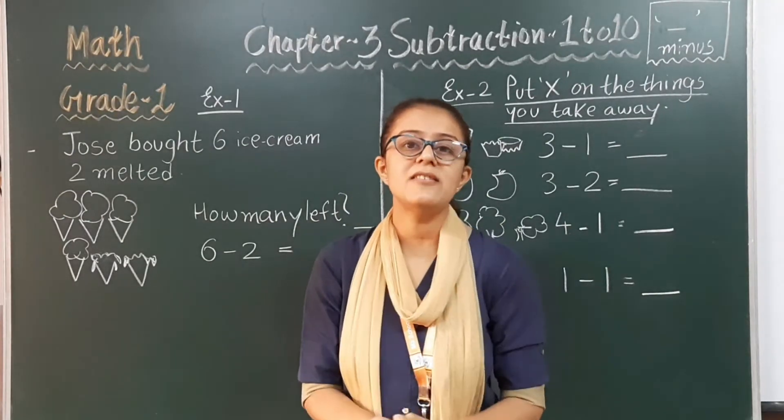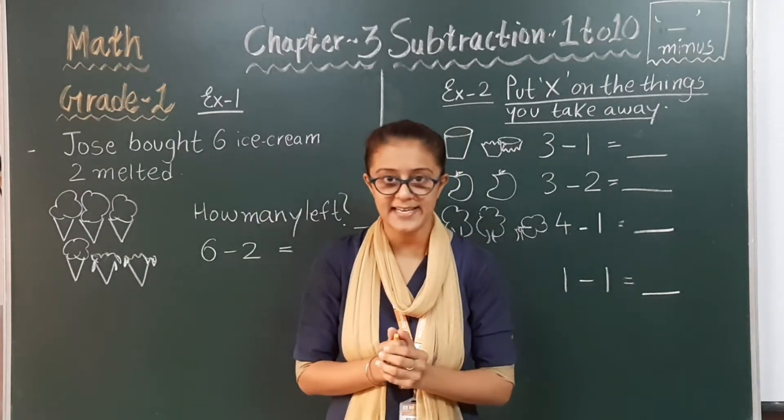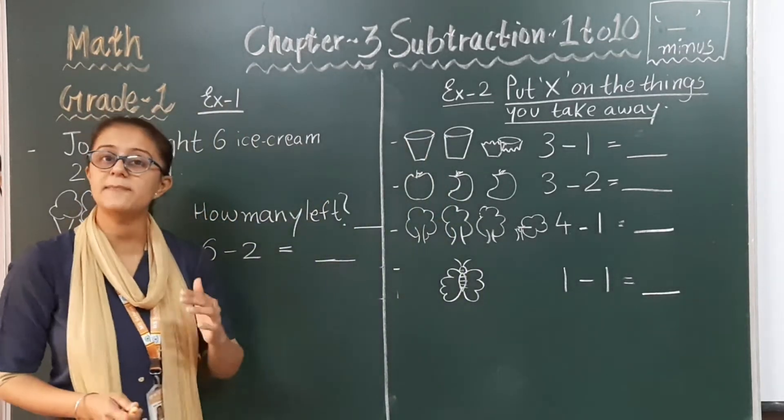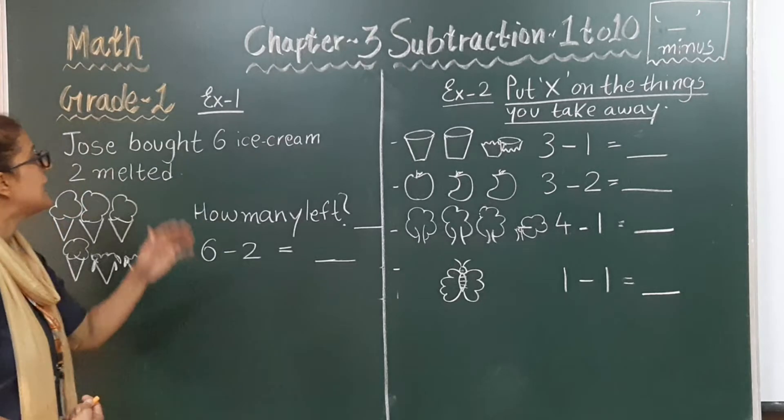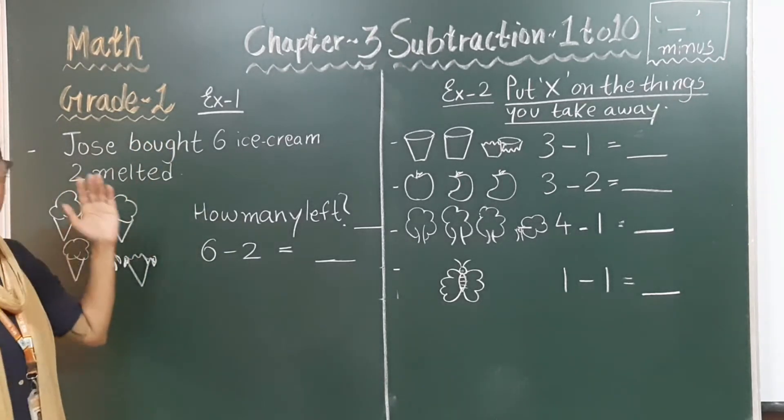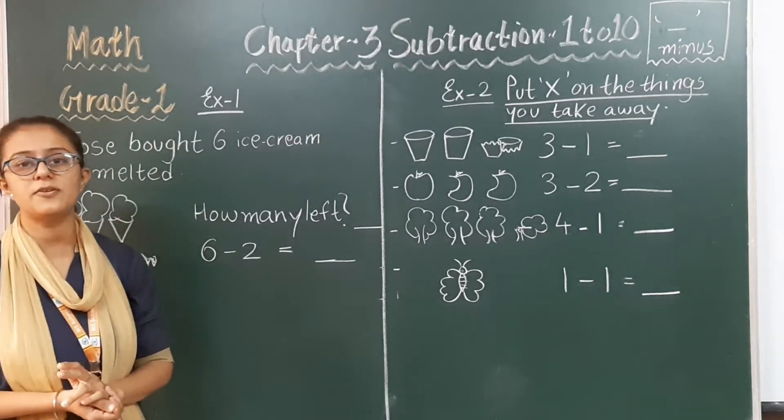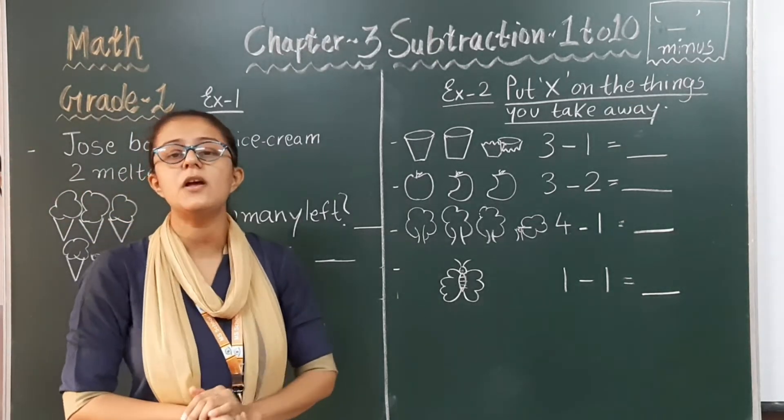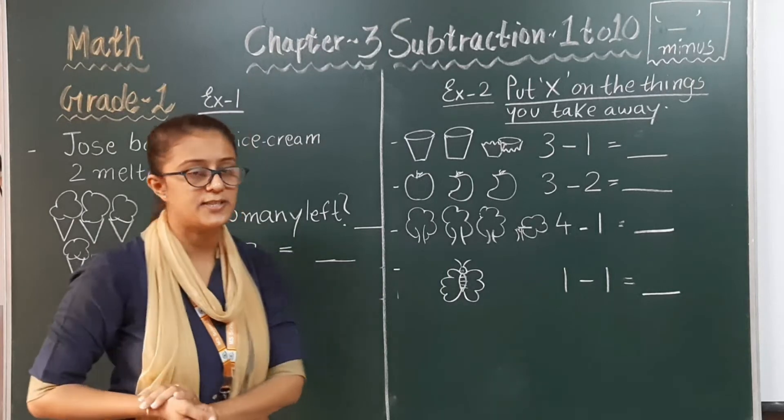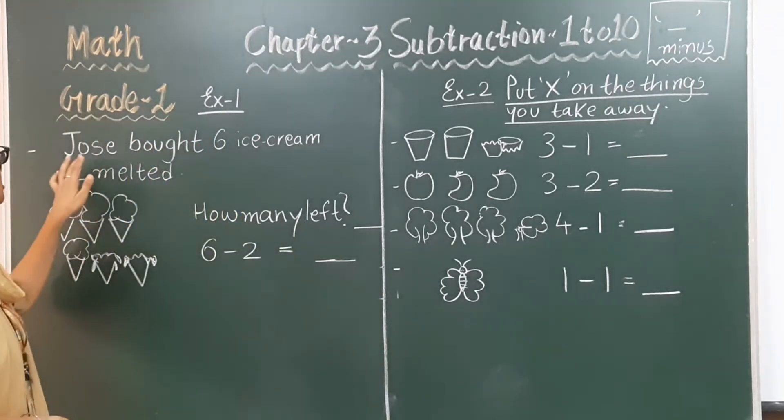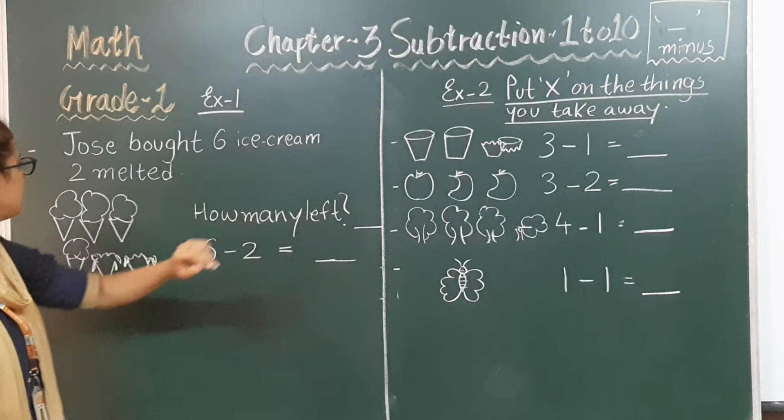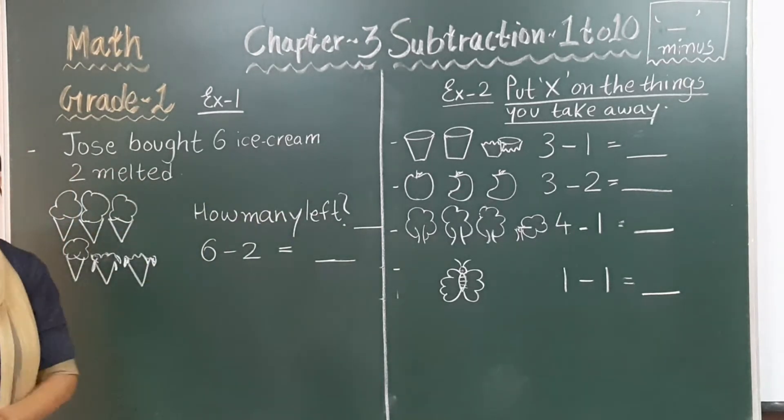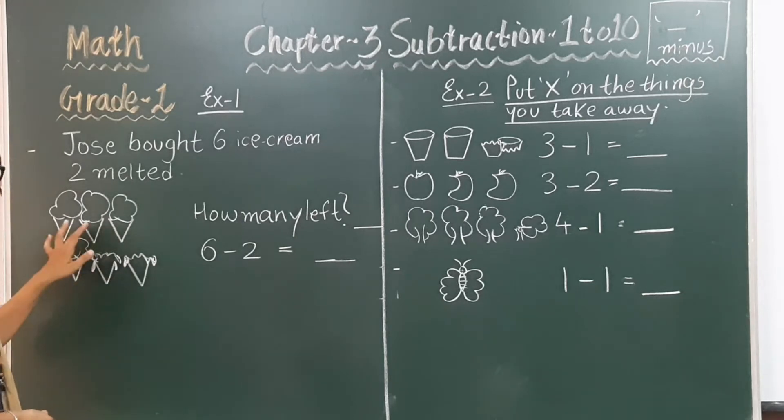Let's learn subtraction with the help of some exercises. Let's move forward to our first exercise which is already mentioned in your Kenauti Term 1 book. Exercise 1. There are many questions given to you but I will explain only one in the video and rest I will explain you in our online sessions. So, the first is Jose bought six ice cream. Two melted.